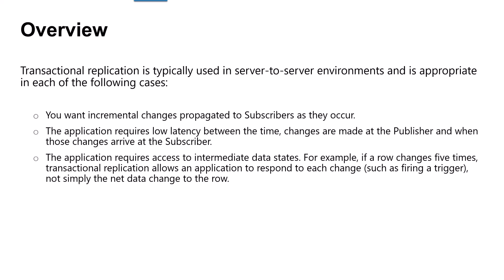The application requires access to intermediate data states. For example, if a row changes five times, transactional replication allows an application to respond to each change, such as firing a trigger, not simply the net data change to the row. The publisher has a very high volume of insert, update, and delete activity.